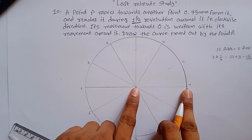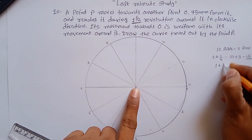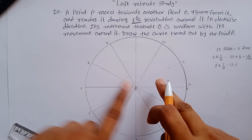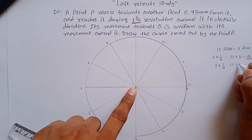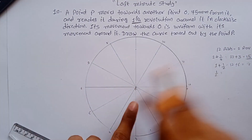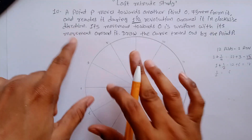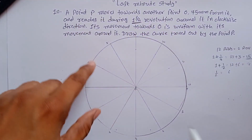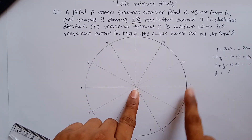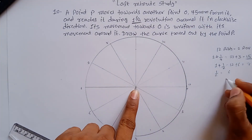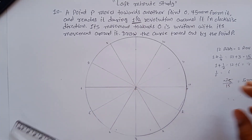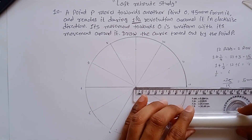If one and one-half revolution is asked, you divide the line into 12 plus 6 which equals 18 parts. If only half a revolution is asked, divide into 6 equal parts. In this case, one and one-fourth revolution means dividing the line into 15 equal parts. The radius — the distance between O and P — is 75mm. So 75mm divided by 15 equals 5mm each. You have to divide this line into 15 equal parts with 5mm each division.